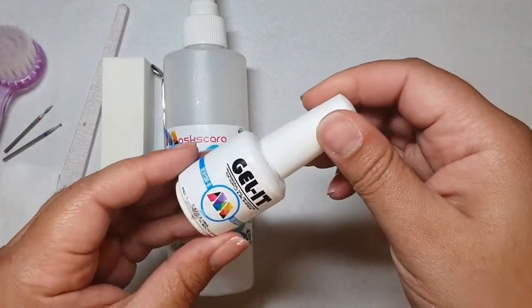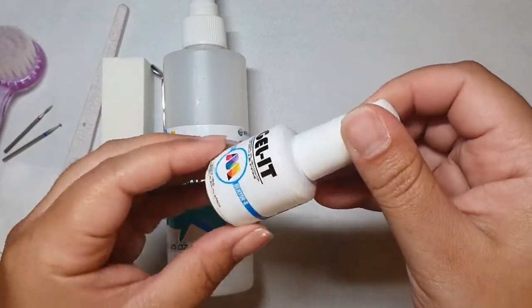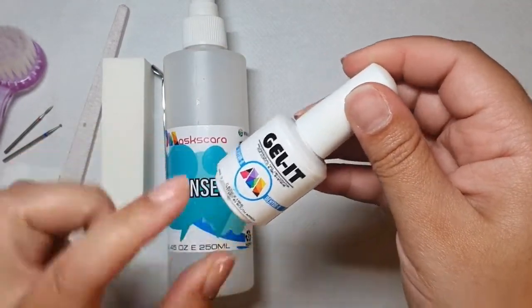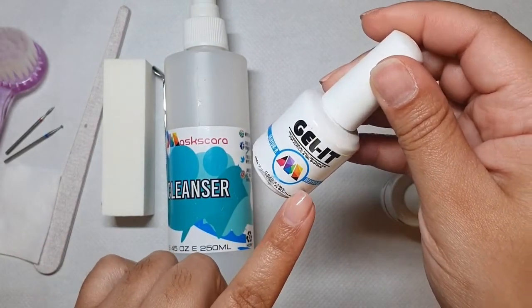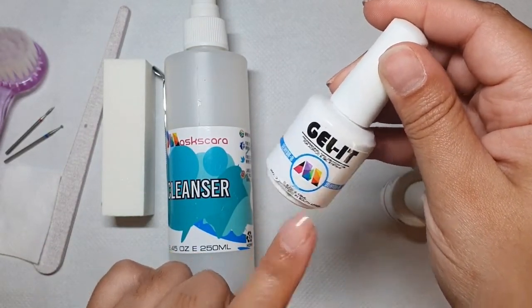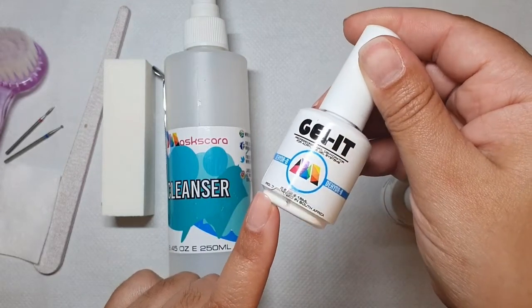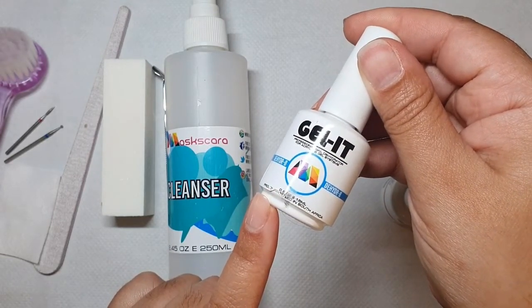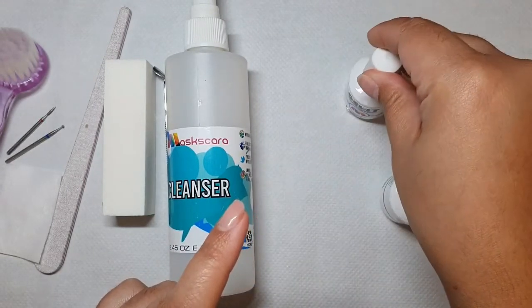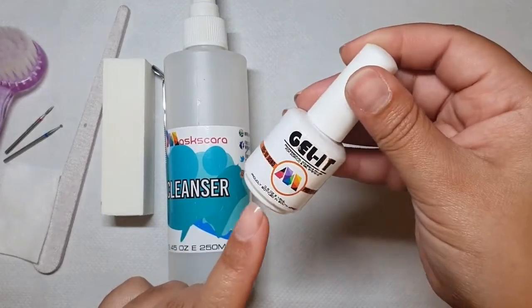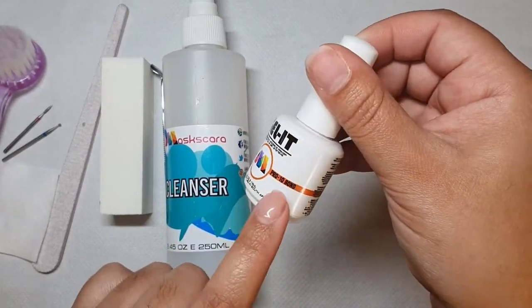Once we've used our cleanser, we move on to our secondary cleansing product called dehydrate. Dehydrate removes the oils and temporarily dehydrates the surface of the nail, giving you the perfect surface.